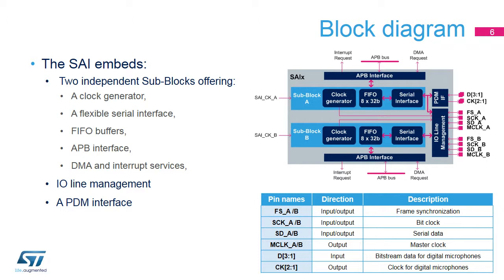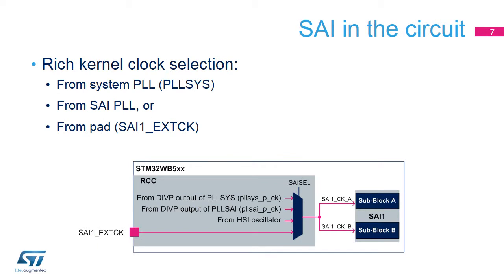In addition, a PDM interface allows the connection of up to six digital microphones. The STM32WB embeds one SAI instance. The SAI can receive a kernel clock, or SAI-CK-X, from the DIVP output of the system PLL, from the DIVP output of the SAI PLL, from HSI oscillators, or from an input pad SAI-1-EXT-CK. The kernel clock is used by the SAI to generate the timing of the serial audio interface when configured in master mode.